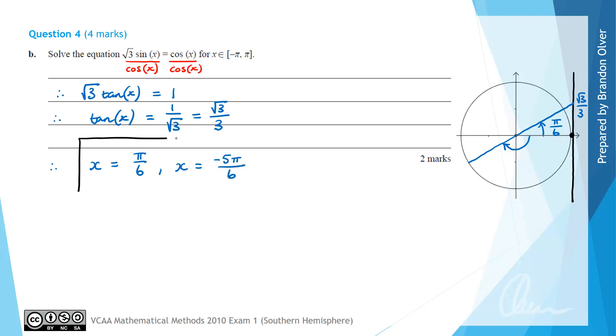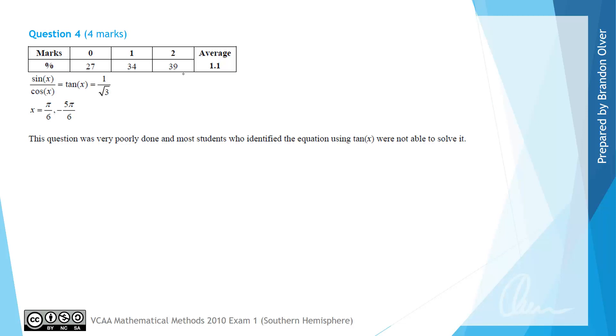So from the examiner's report, we can see that close to 40% of students got this completely correct, while a third of students were on the right track. So overall, the comment was that this question was very poorly done, and most students who identified the equation involving tan were not able to solve it. So it's a really important reminder that solving trig equations is a very important skill that students need to have.